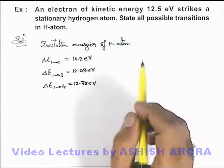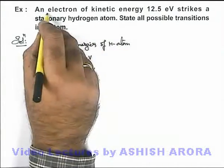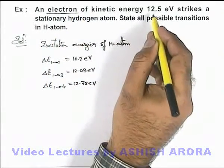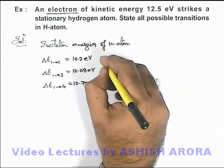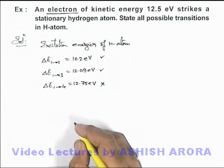In this situation, we can see 12.5 is not equal to any exact difference, but this is the kinetic energy of an electron. So a part of this energy can also be used for excitation. Here we can see this excitation is possible, this is also possible, but this is not possible.